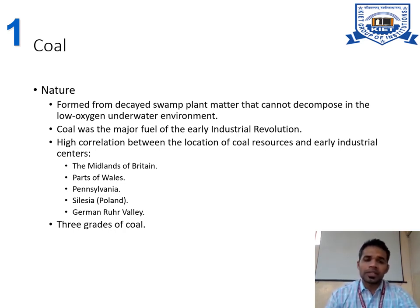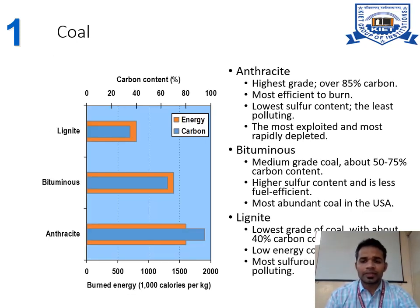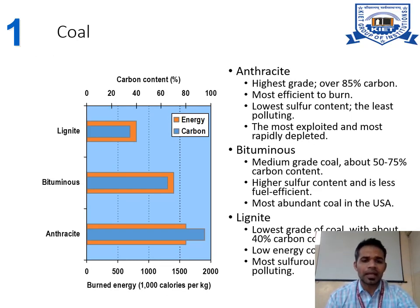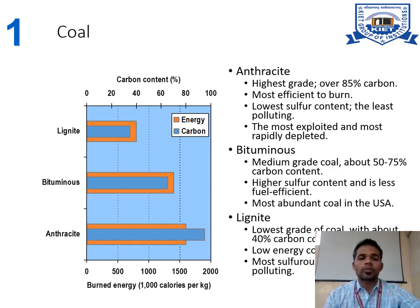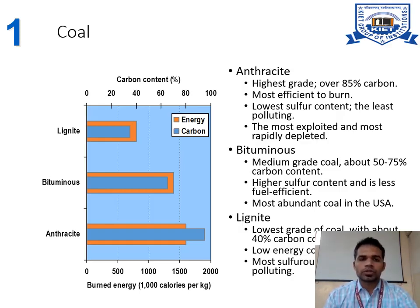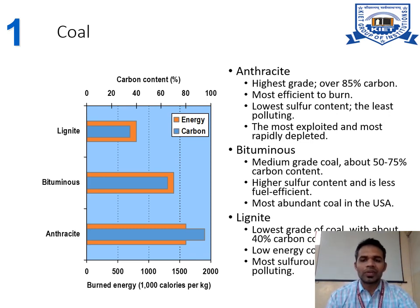There are three grades of coal: anthracite, bituminous, and lignite. By the graph, you can see anthracite has the better quality because it has good burn energy and also has the most carbon content. Lignite has the lowest grade of coal. These are the three types of coal which we are using in our coal industry.